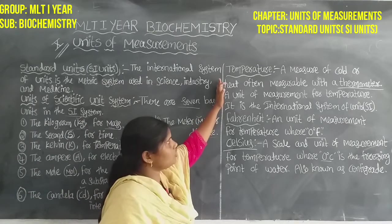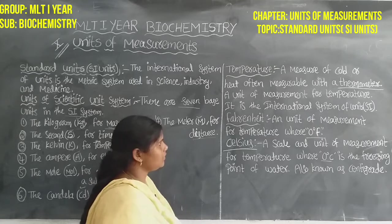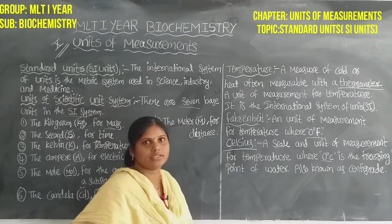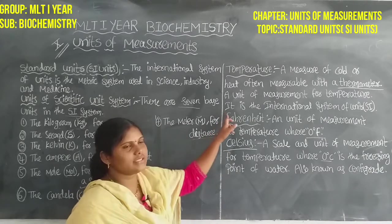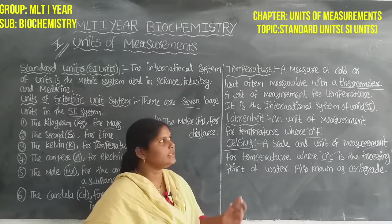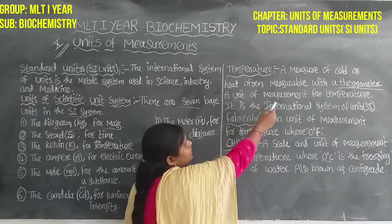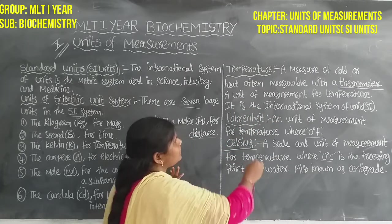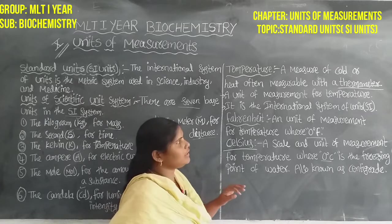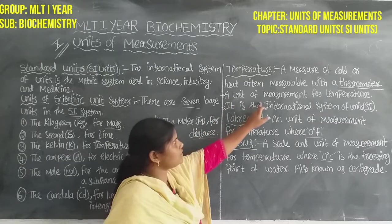Then next is temperature. In this case for the short question, temperature: a measure of cold or heat, often measurable with a thermometer. We identify the temperature. Next, a unit of measurement for temperature.